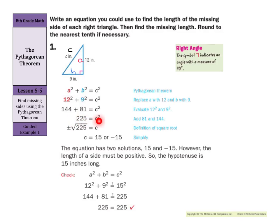So we end up with 225 equals C squared. Just like when you want to undo multiplication you divide, or undo addition you subtract — if you want to do the opposite of squaring a number, you take the square root. Technically it's plus or minus, since negative 5 squared is still positive 25. So C equals 15 or negative 15. However, we're dealing with distances here — sides of triangles — so it's really only going to be the positive answer. Our hypotenuse is 15 inches long. You can see where the check step puts in the numbers for A, B, and C, and both sides equal 225.